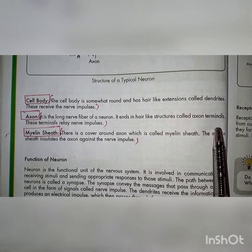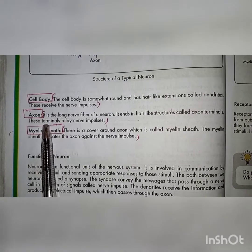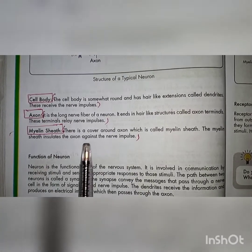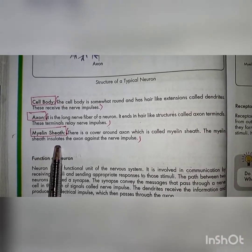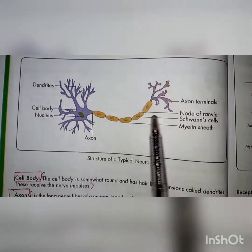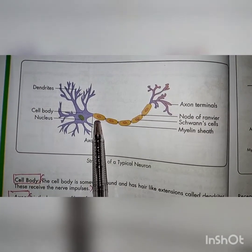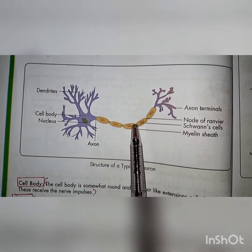The axon terminals relay nerve impulses — the message in the form of nerve impulses is passed on to the next neuron. There is a cover around the axon called the myelin sheath. The myelin sheath insulates the axon against nerve impulses. If you look at the structure, the myelin sheath is the covering shown around the axon.